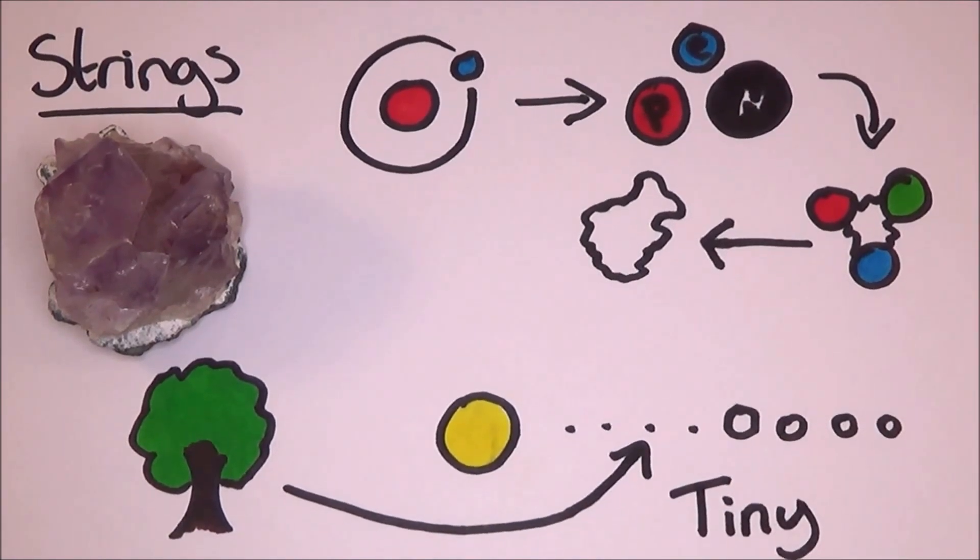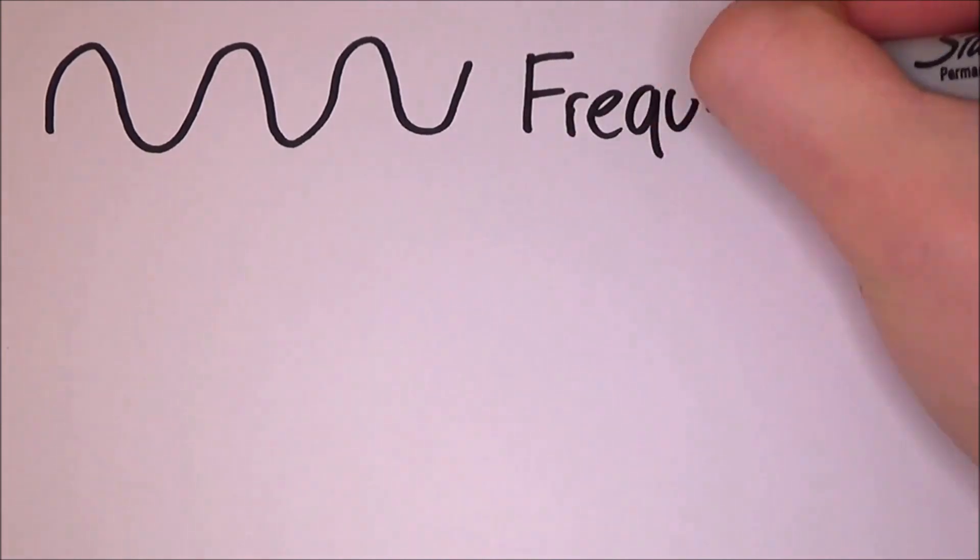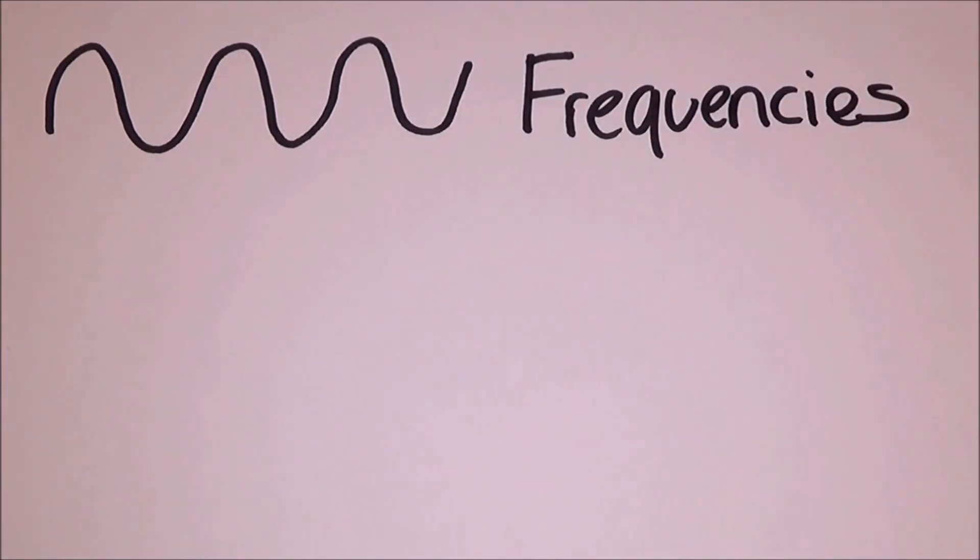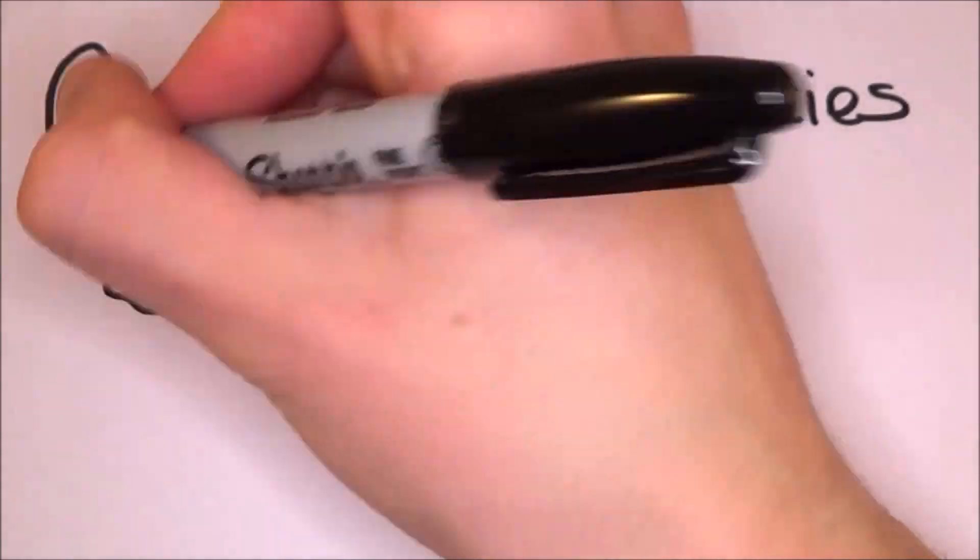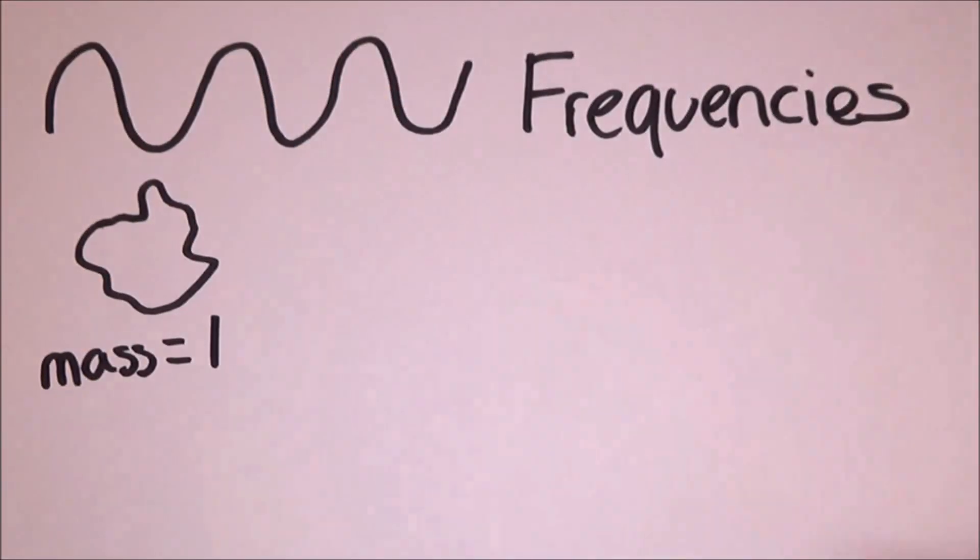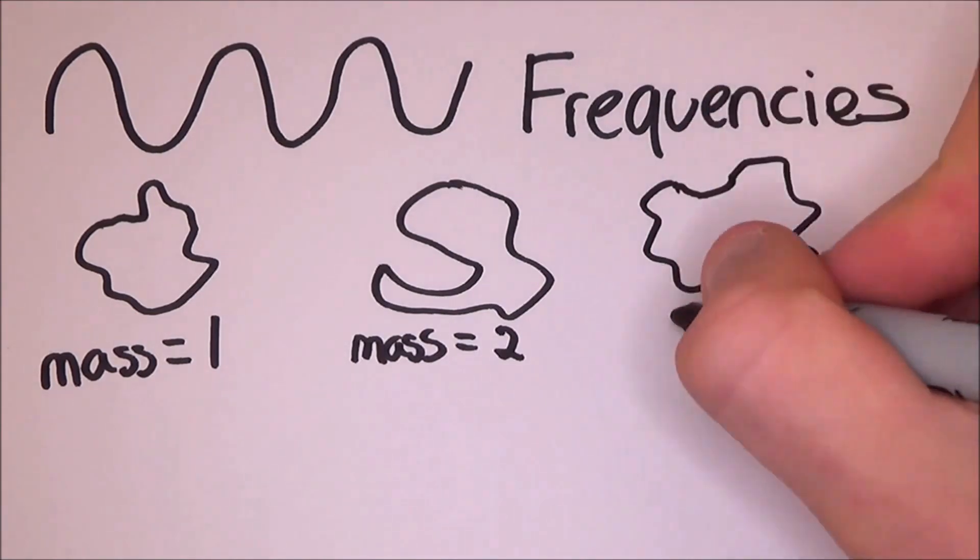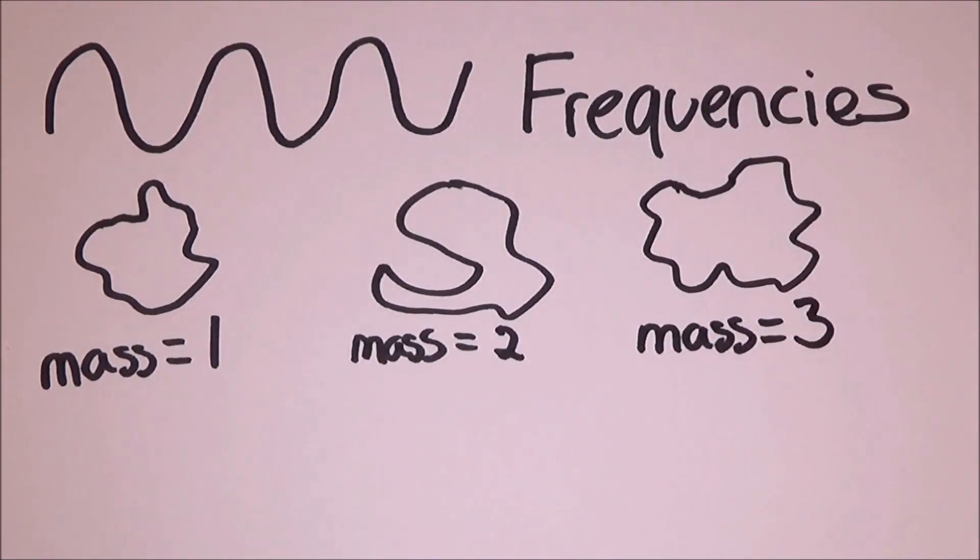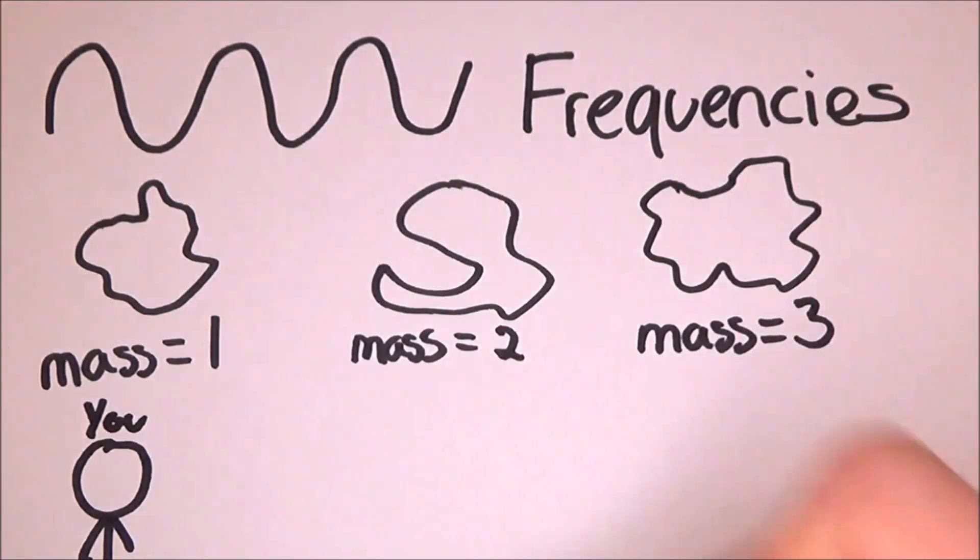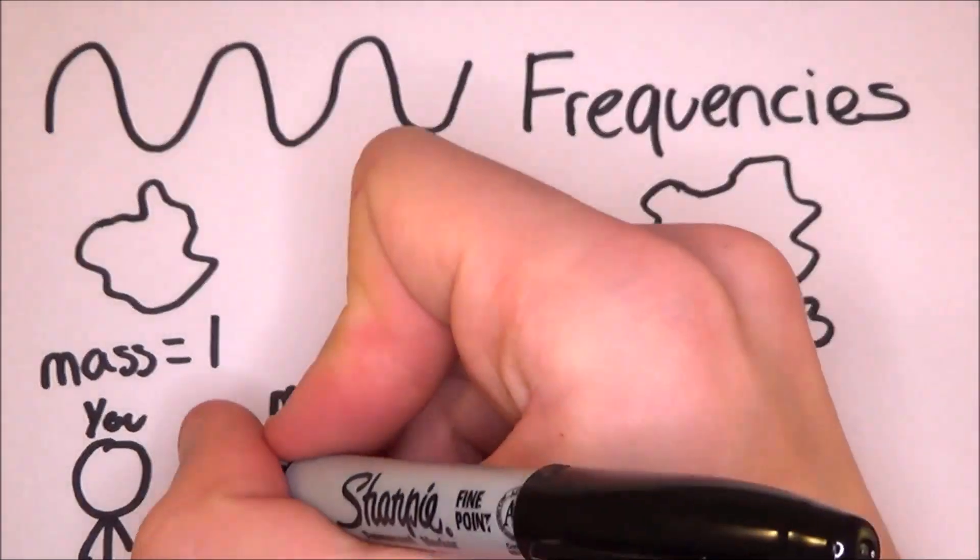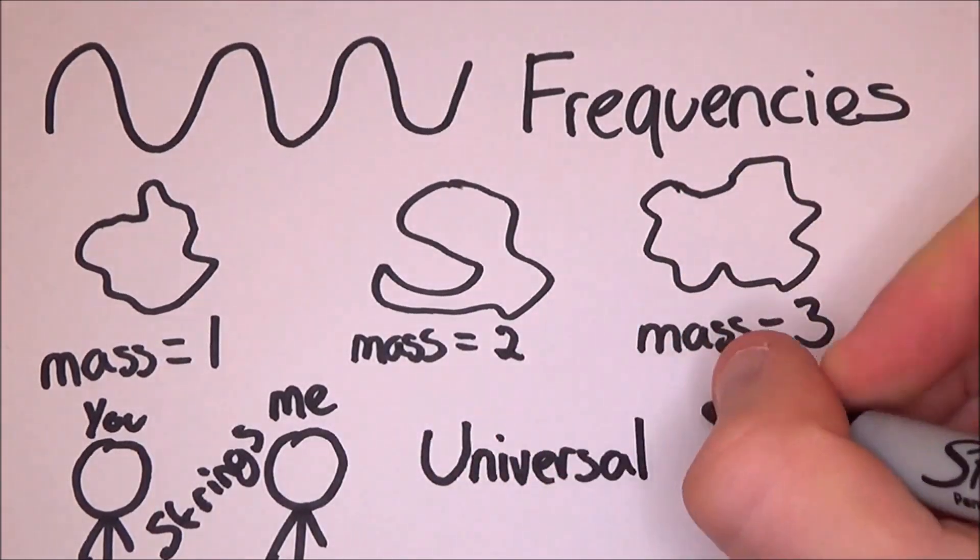So here is the basic idea. Just like a guitar string, the different ways that it can vibrate based on how long it is and how tight it is, basically its frequencies, will cause it to make different sounds. The different ways that these strings vibrate will make the particle have different properties, such as mass, charge and spin. So the difference between you and me is simply just the tiny differences in our strings.